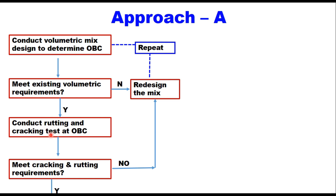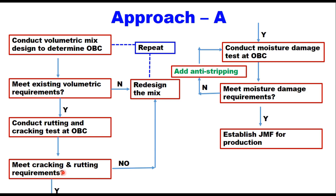Once you get a mix that meets volumetric properties, you test this mixture for rutting and cracking at the optimum binder content. If the mix does not meet rutting and cracking requirements, you repeat the design, changing gradation, binder, or both. Once the mix meets cracking and rutting requirements, you conduct a moisture damage test at optimum binder content. If it does not meet the requirement, you add an anti-stripping agent — liquid, lime, or other material — to improve moisture susceptibility. Once it meets the moisture damage requirement, that is your job mix formula for production.